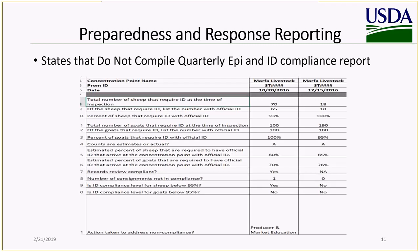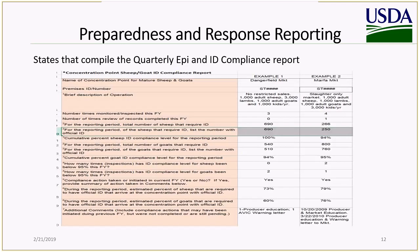This is the individual EPI and ID Compliance Report, and this one is the summary. The questions are pretty similar to the one just shown, but this one is additive for all the times you visited a given market throughout the reporting period. Each column will represent cumulative numbers of sheep and times inspected, et cetera.